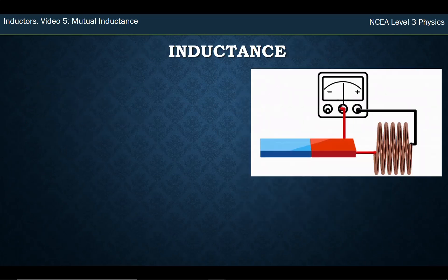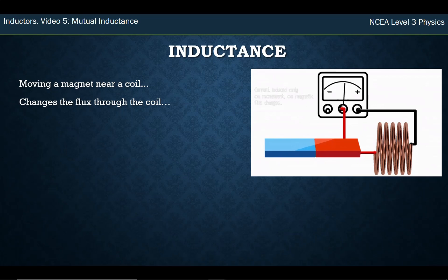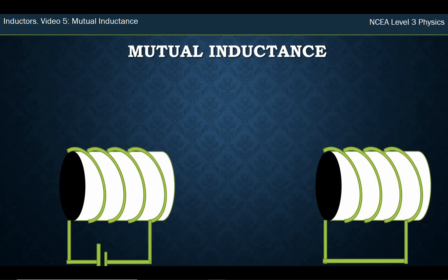Inductance is about generating electricity. The word induced means to generate electricity. The way we can do that is we can move a magnet near a coil. The key part is it's not that there's a magnetic field in the coil, it's that the flux, which is the magnetic field through an area, changes. When we have a changing flux, that induces electricity.